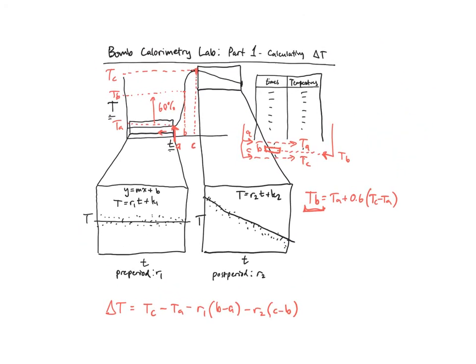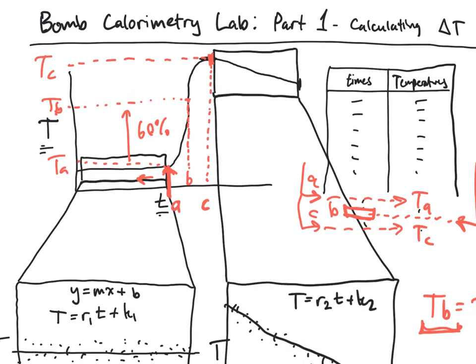And now just a couple more words about the whole purpose of this. What this is actually calculating is it's extrapolating out the temperature change that would be occurring from the pre-period and extrapolating back what the temperature change would be from the post period, and then choosing a spot that happens to exist partway through that ignition. And the experts have just found that sixty percent of the way between Ta and Tc seem to produce the best results. That height right there, that's delta T.